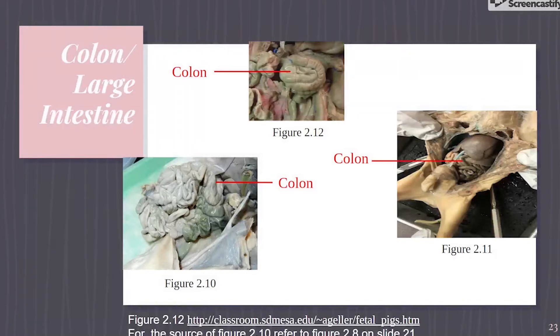In Figure 2.12, you can see the pig's colon has a spiral shape, whereas humans have an ascending, transverse, and descending colon.